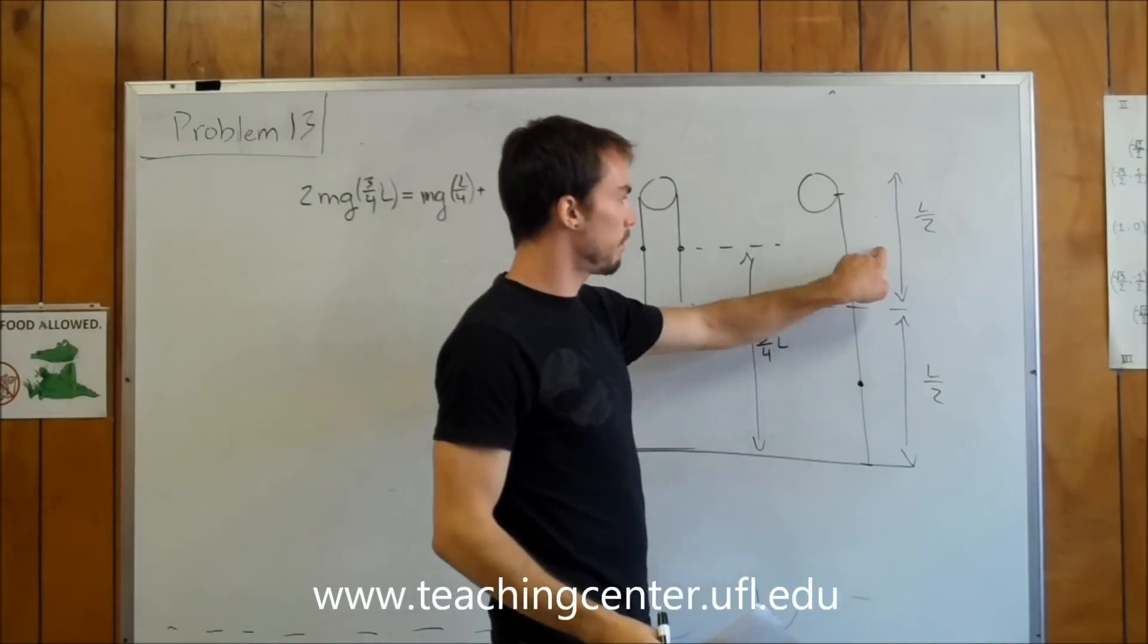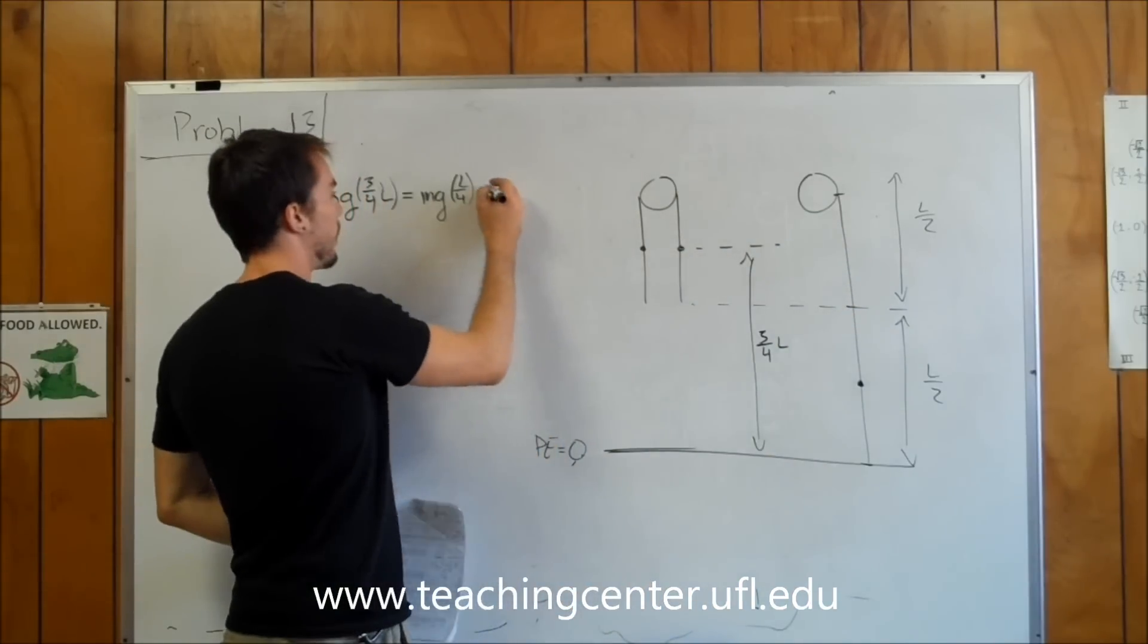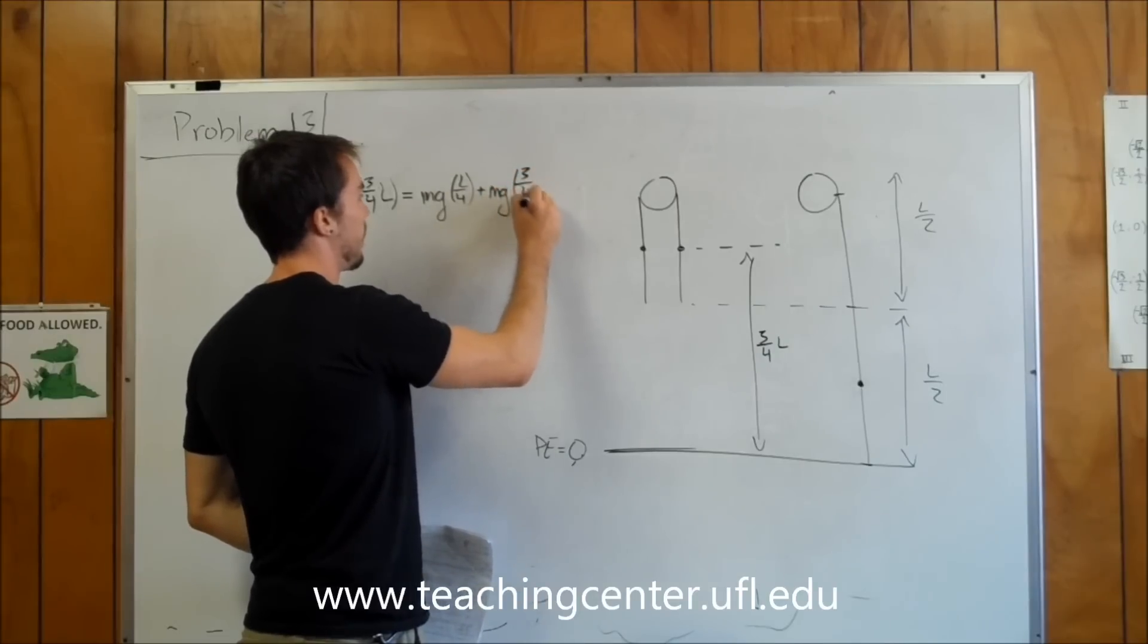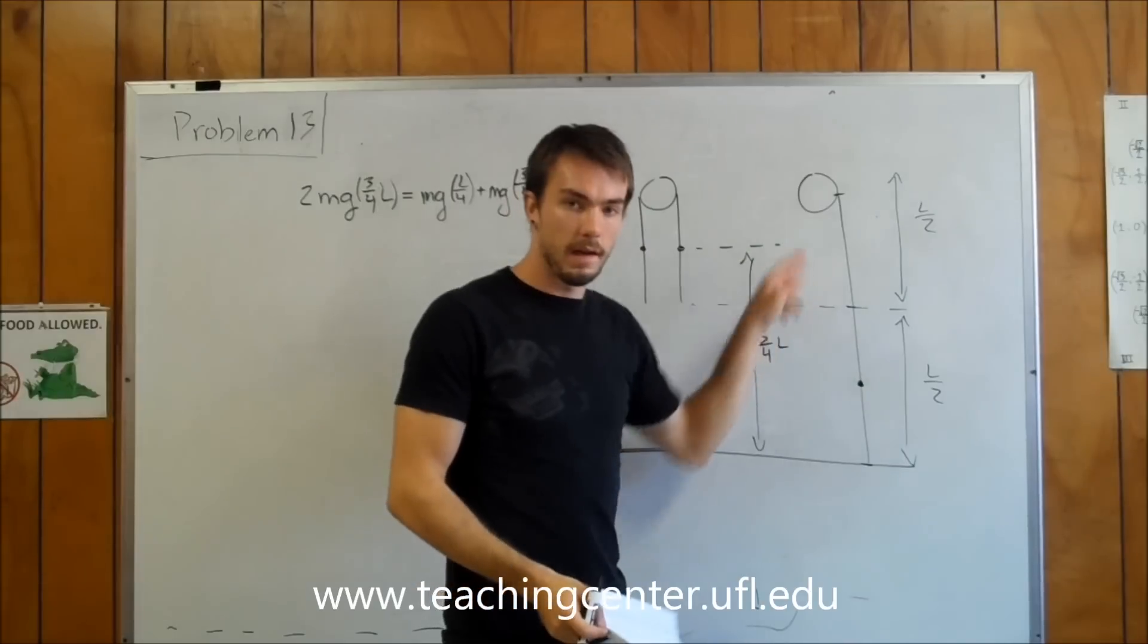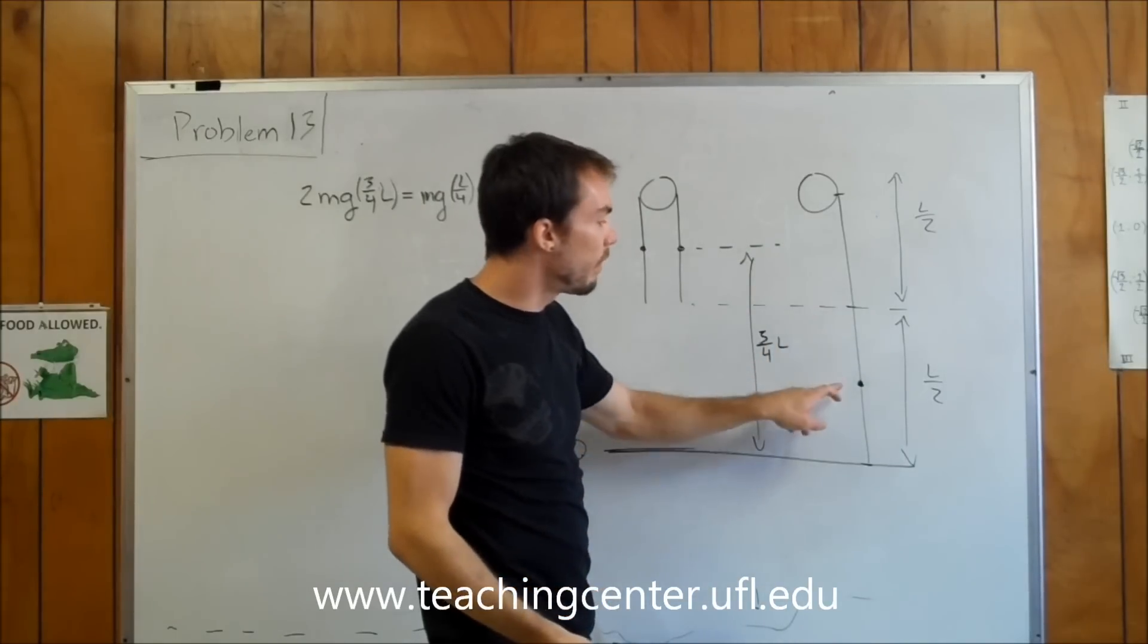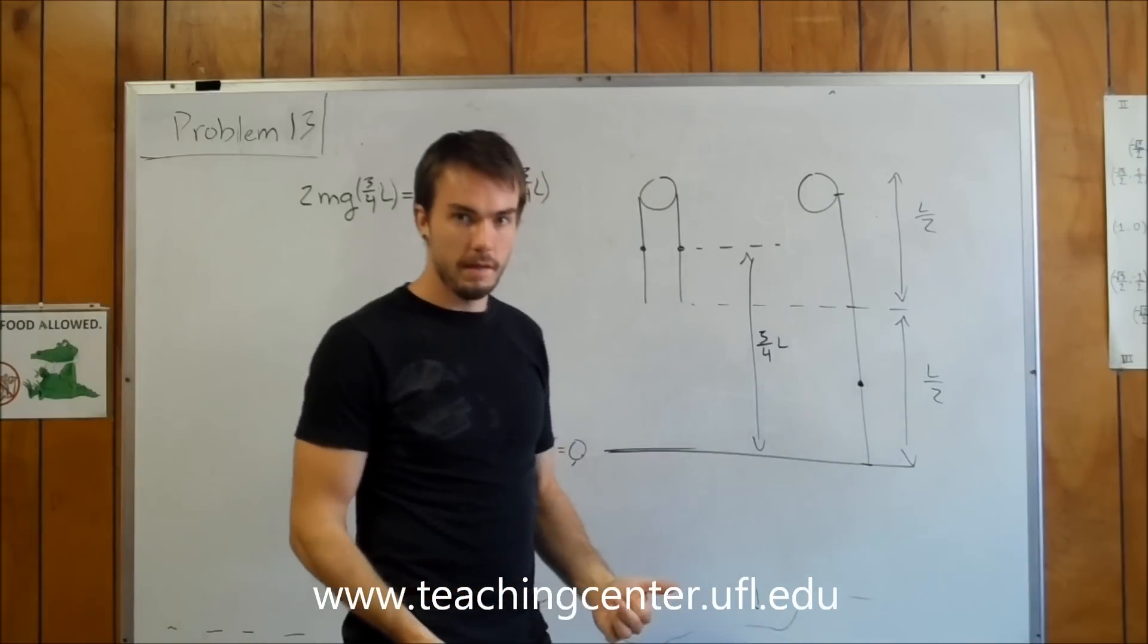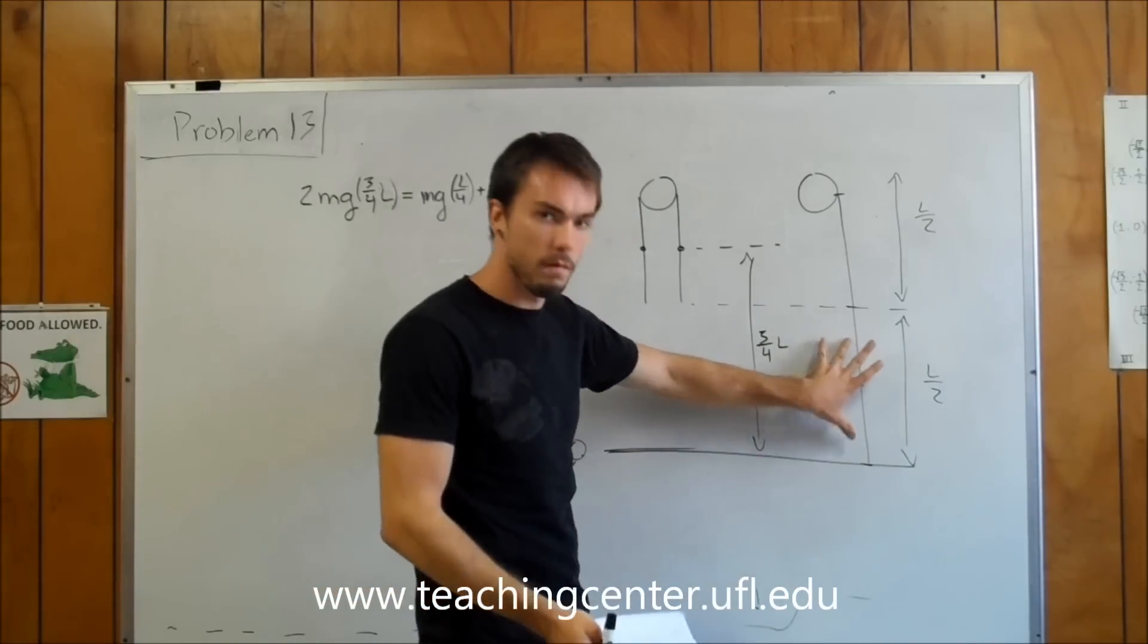Plus this guy - his center of mass really didn't change, it went up and then went back down. So we have just mg times 3/4 of L, only one of them this time. Then we have our kinetic energy. Both of them have a kinetic energy equal to 1/2 mv squared. They both have the exact same velocity because it's the same rope.